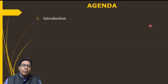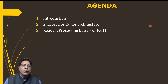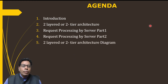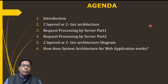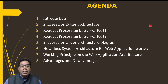First we will discuss the introduction to web application architecture. Then we will discuss the two-layer or two-tier architecture. Then we'll look at request processing by the server, part 1 and part 2. Then we'll discuss the diagram for two-layer or two-tier architecture, how the system architecture works, the working principle with the help of a diagram, the advantages and disadvantages, and finally we'll conclude the two-tier architecture.